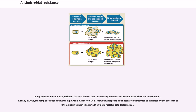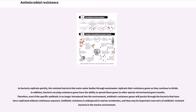Along with antibiotic waste, resistant bacteria follow, thus introducing antibiotic-resistant bacteria into the environment. Already in 2011, mapping of sewage and water supply samples in New Delhi showed widespread and uncontrolled infection as indicated by the presence of NDM-1-positive enteric bacteria, New Delhi metallo-beta-lactamase-1. As bacteria replicate quickly, the resistant bacteria that enter water bodies through wastewater replicate their resistance genes as they continue to divide. Bacteria carrying resistance genes have the ability to spread those genes to other species via horizontal gene transfer. Therefore, even if the specific antibiotic is no longer introduced into the environment, antibiotic resistance genes will persist.